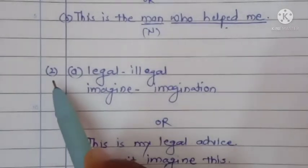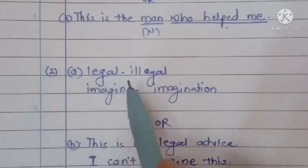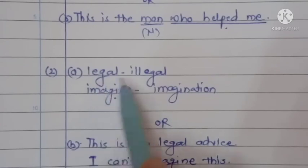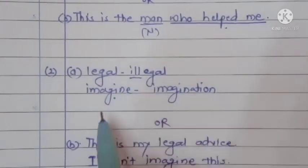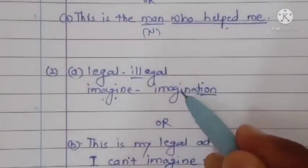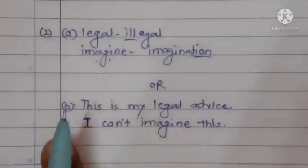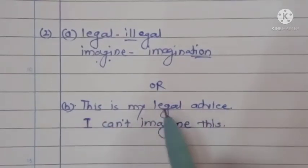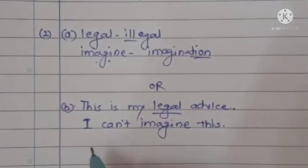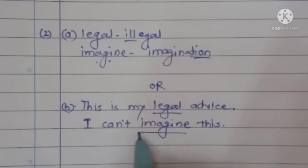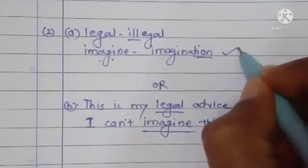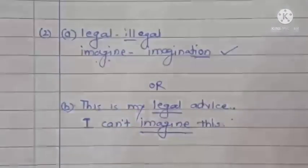Second activity is for one mark. Two words are given — 'legal' and 'imagine' — and you need to add a suffix or prefix. For 'legal', add prefix 'il-' to get 'illegal'. For 'imagine', add suffix '-ation' to get 'imagination'. The suggestion is to use one of these words in a sentence: 'This is my legal advice' or 'I can't imagine this.' Adding a prefix or suffix is usually the simpler option.